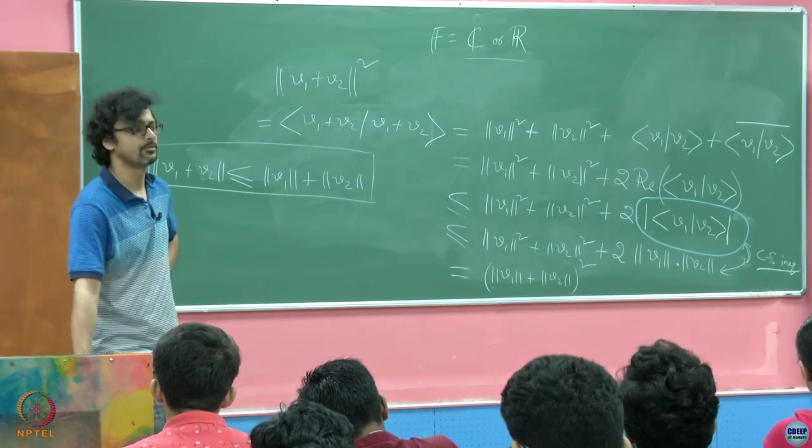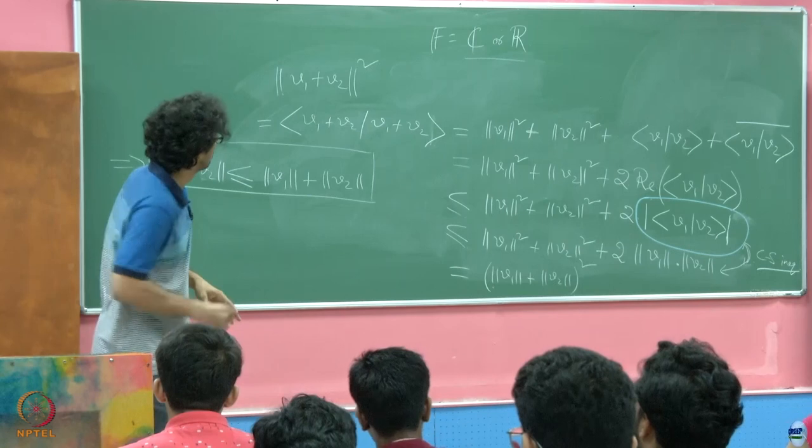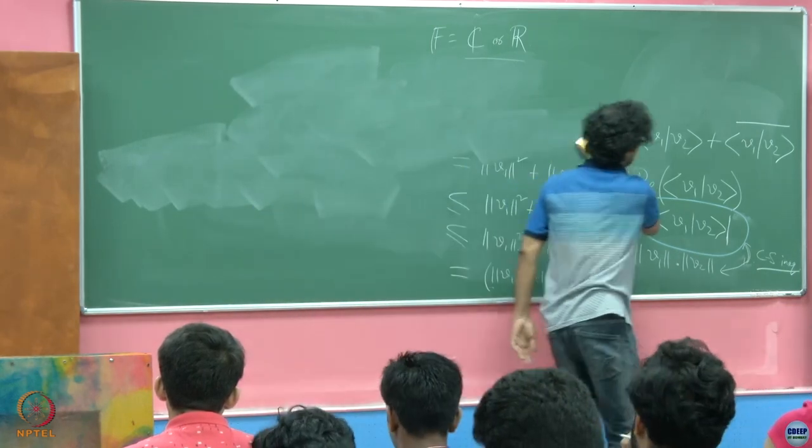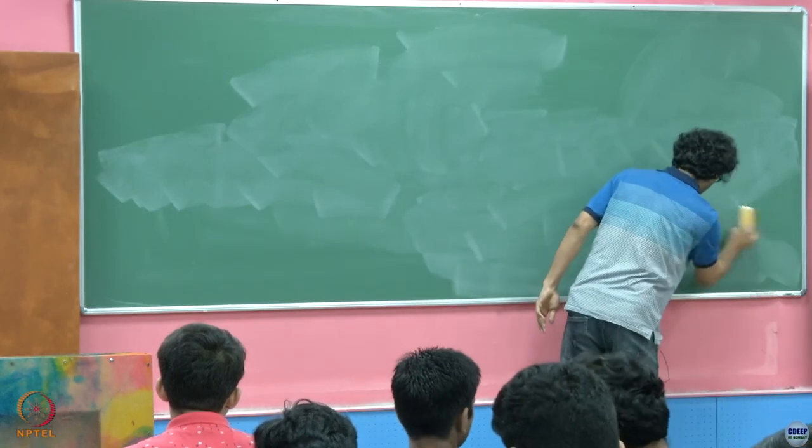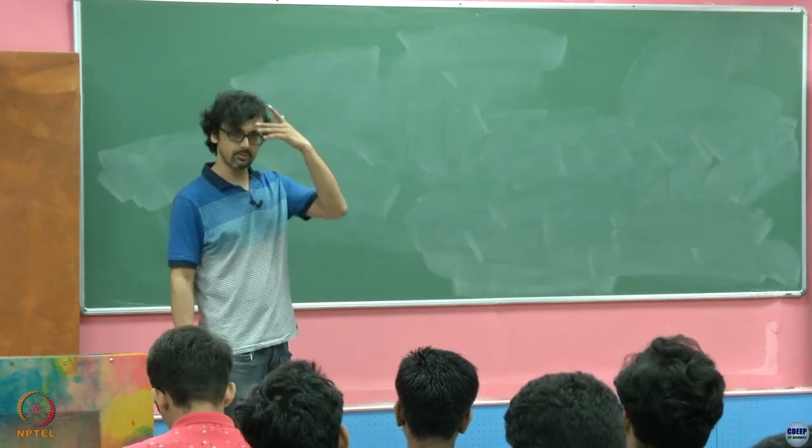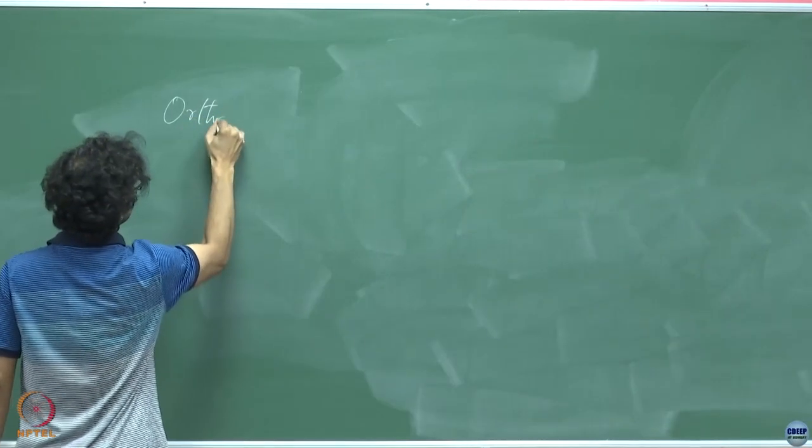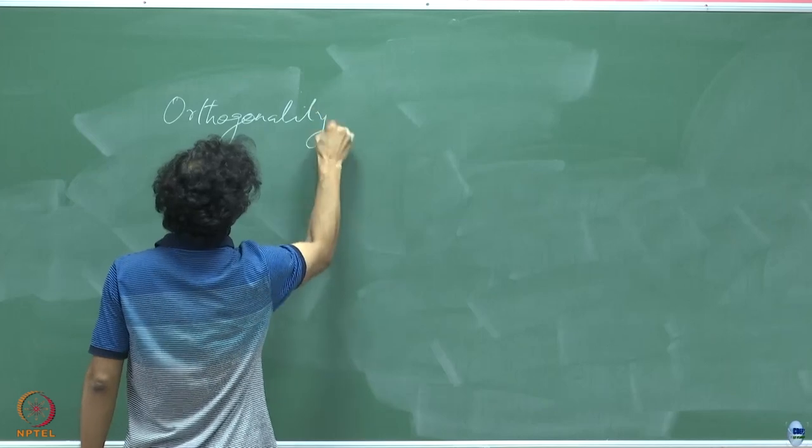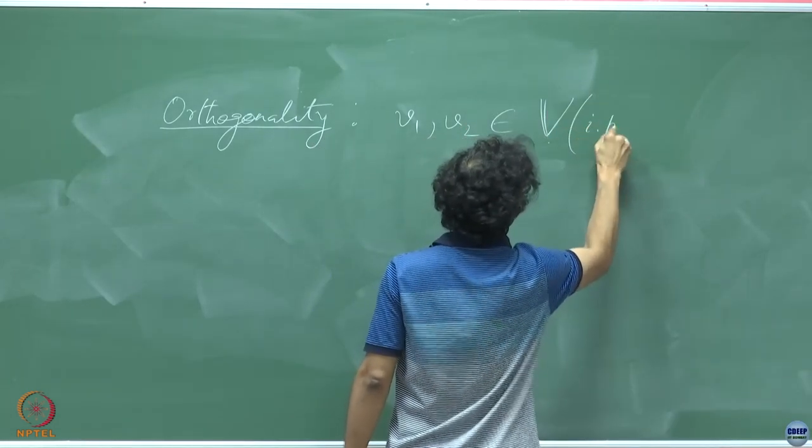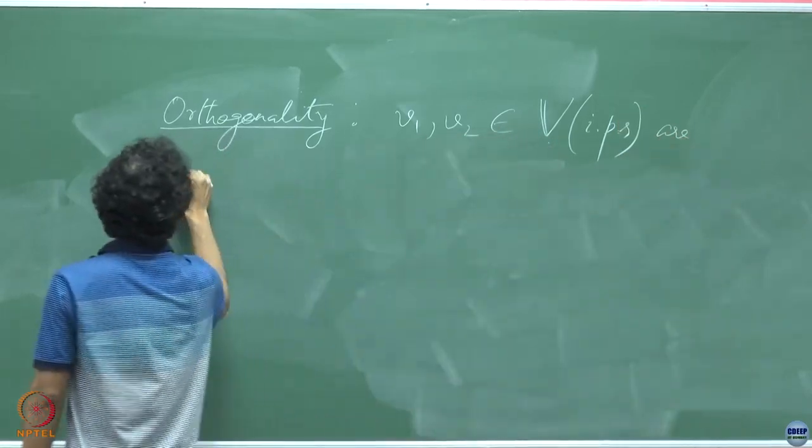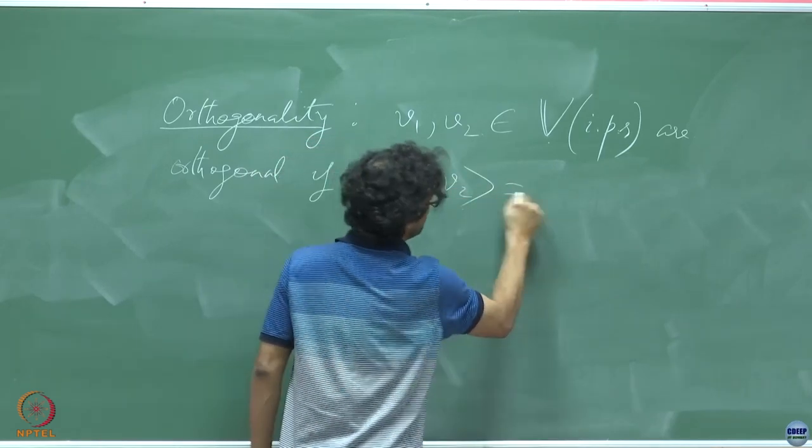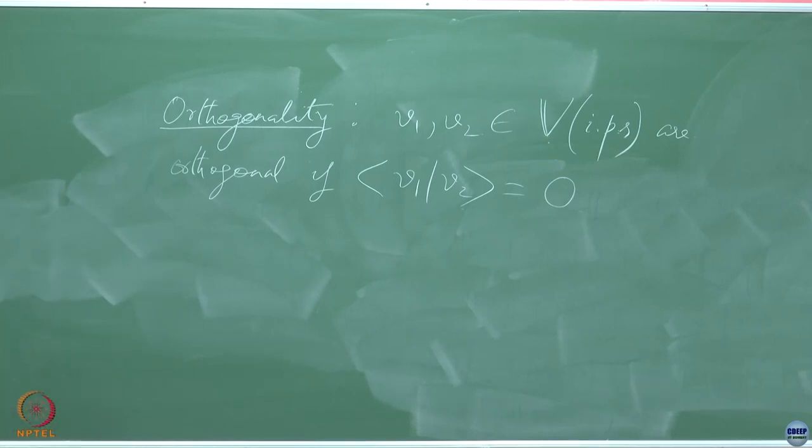As I said a while back, we have this idea of orthogonality. Let's dig a little deeper and see how far we can stretch our notions of Euclidean spaces. We have the famous Pythagoras theorem: base squared plus height squared is the hypotenuse squared. Let's define orthogonality first formally. V1, V2 belonging to V, which is an inner product space, are orthogonal if V1, V2, the inner product thereof is 0. That's the definition of orthogonality.